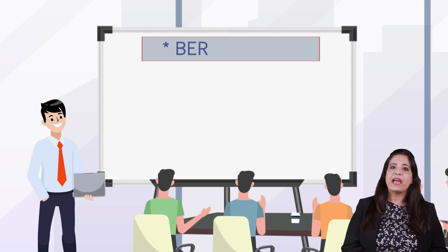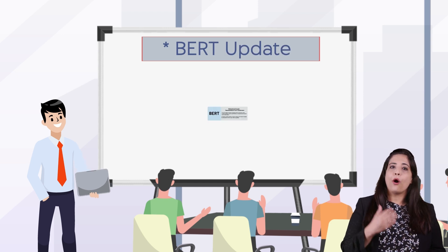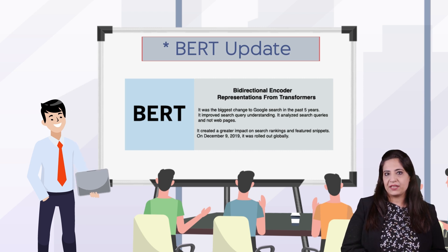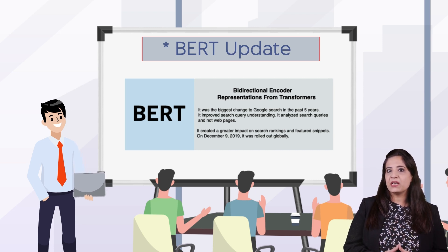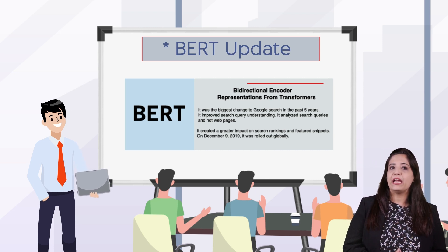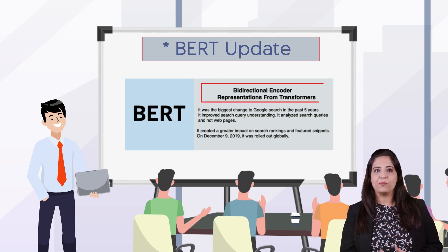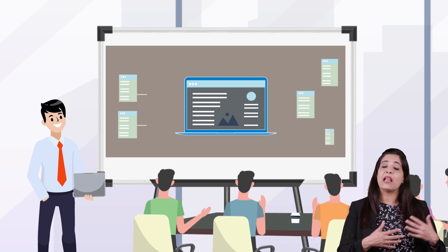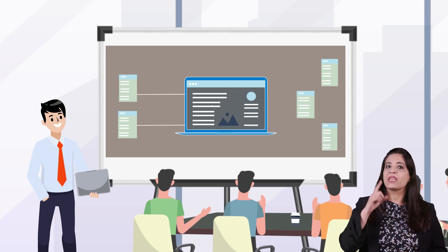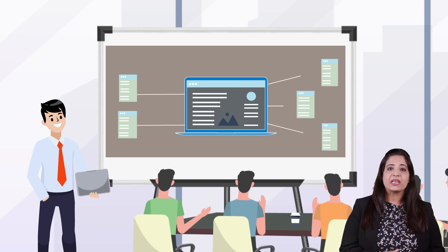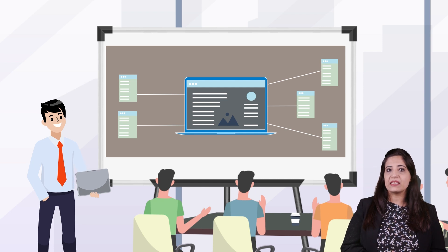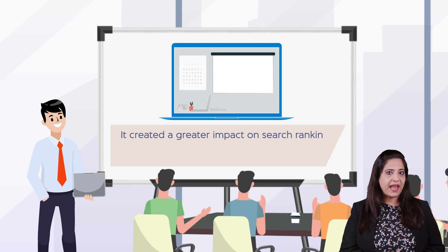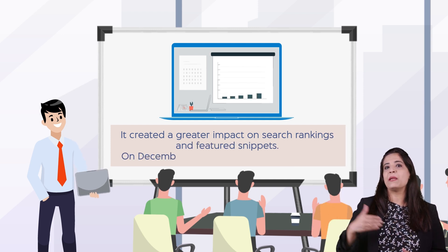Lastly, we have the BERT update. On October 25, 2019, Google announced the BERT update. The full form of BERT is Bidirectional Encoder Representations from Transformers. It was the biggest change to Google search in the last five years. It improved search query understanding by analyzing search queries and not web pages, and created a greater impact on search rankings and featured snippets.